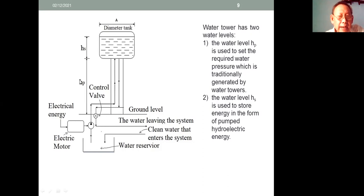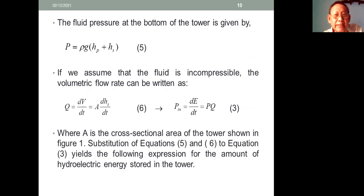There are two heights that can be used for calculation, HS and HP. The fluid pressure at the bottom of the tower is given by P = ρG(HP + HS).